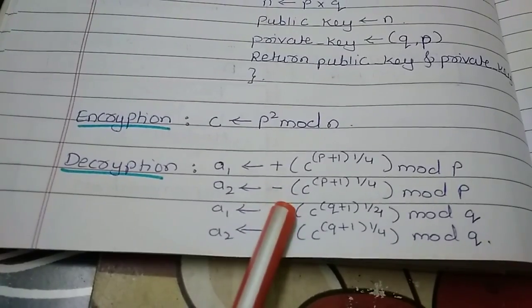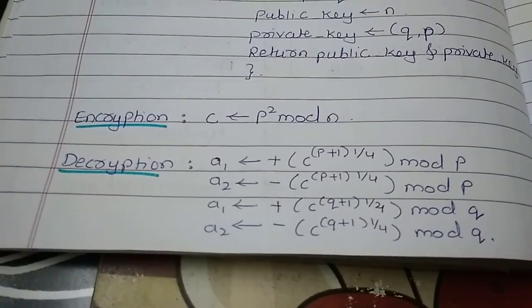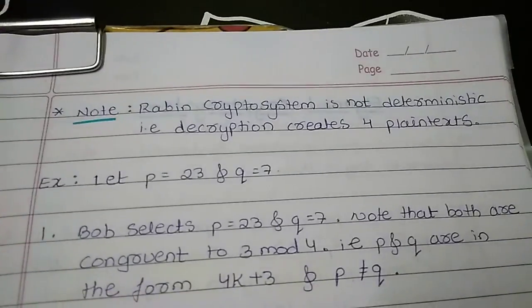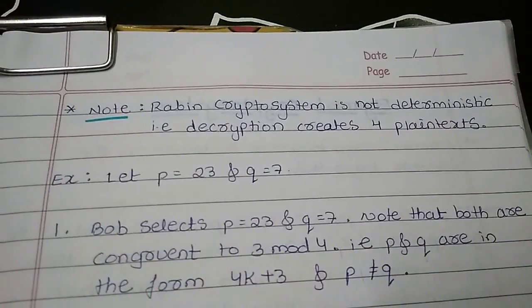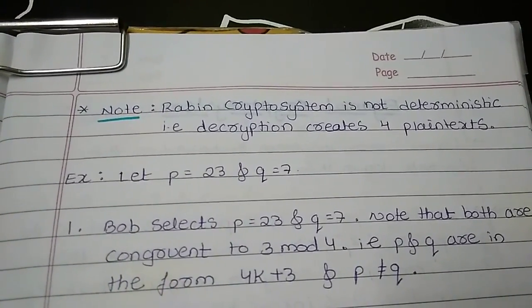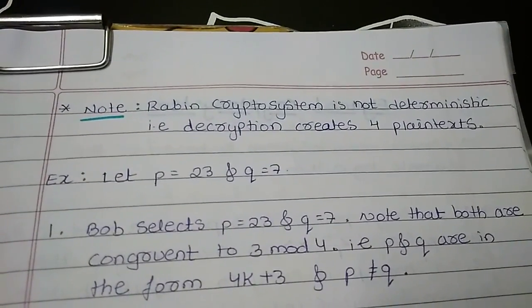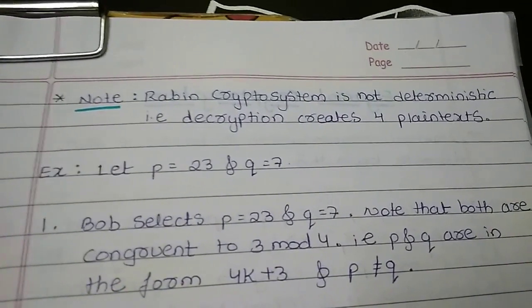Now let us understand this one. Before that we should remember that the Rabin cryptosystem is not deterministic. As just now I have told you, that means the decryption process is going to create four plain texts out of which the receiver has to identify the actual plain text.